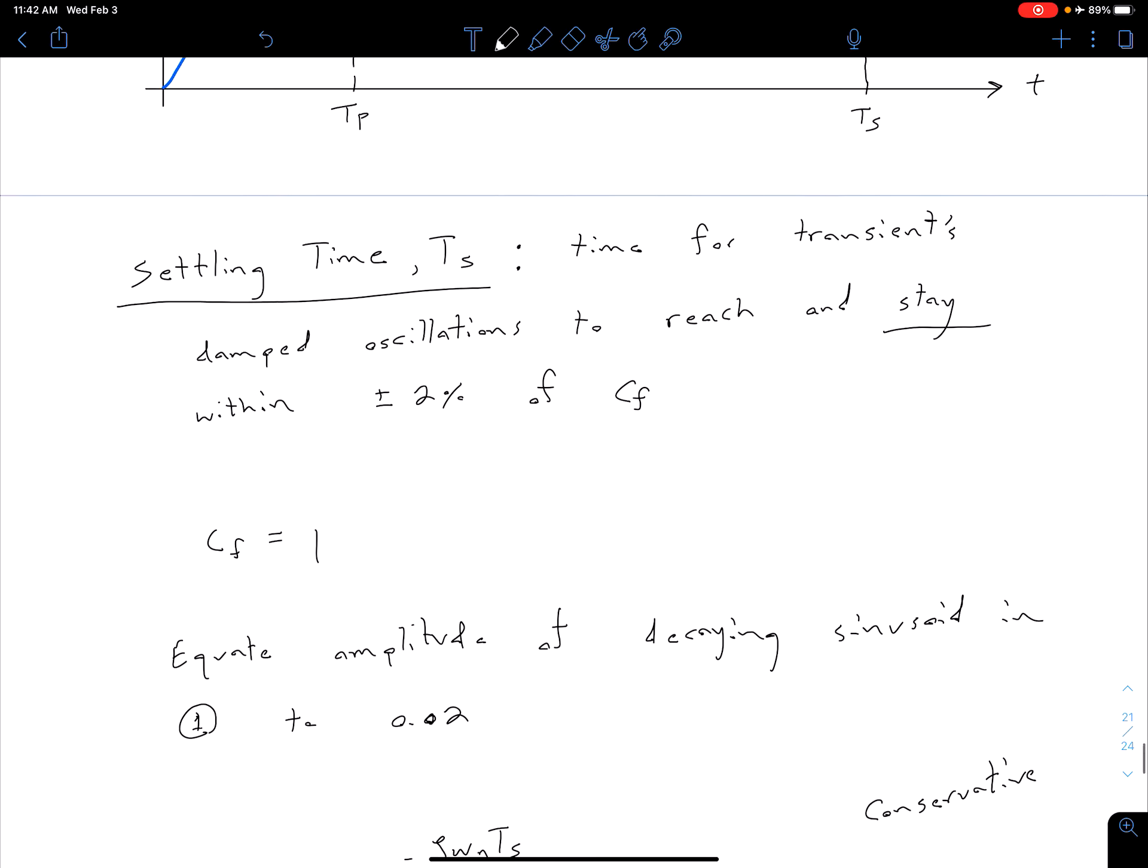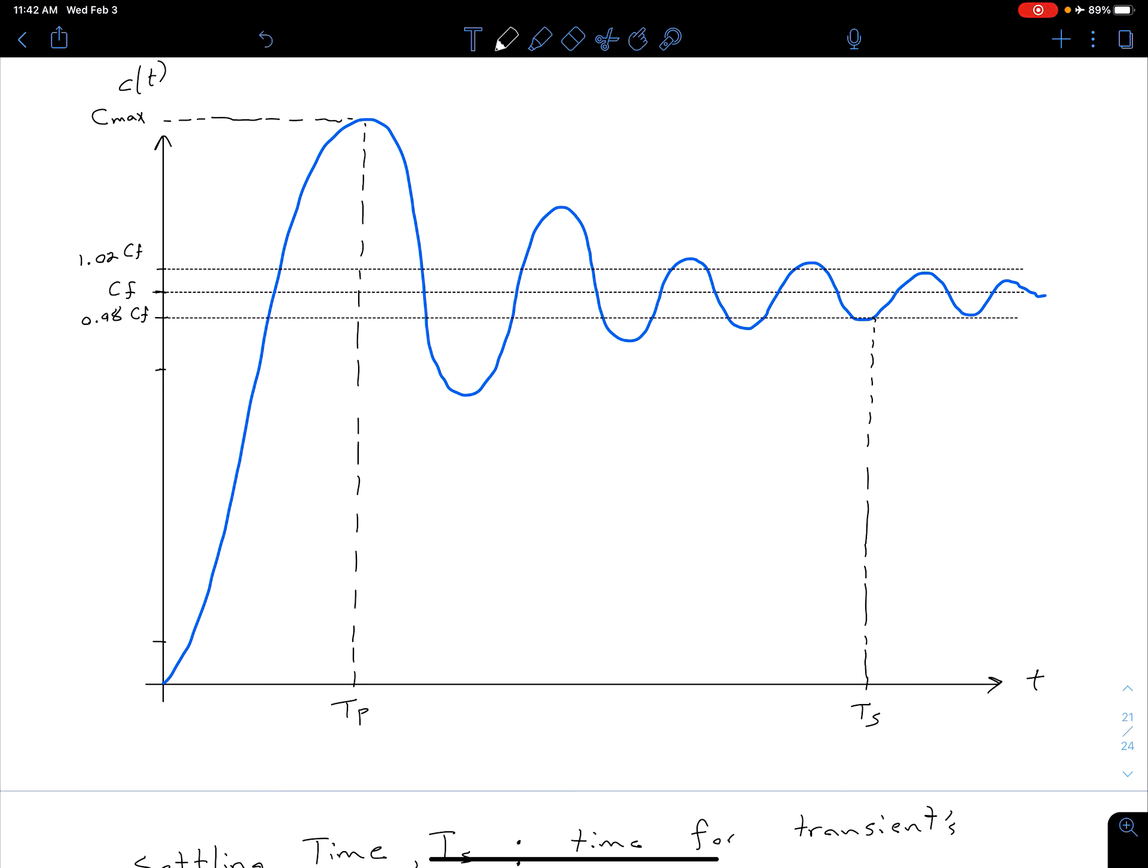Coming back up here to our plot, just real roughly, so this isn't to scale, but let's say down here is 0.1 CF, and right here is 0.9 CF. So between these two points on our time axis would be our rise time. This distance here would be our T sub R. Let me do that lowercase just to be consistent. So we've got our rise time, our peak time, and our settling time all labeled on here now.